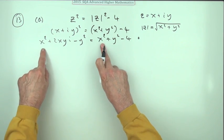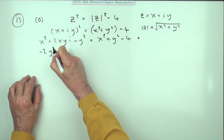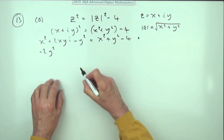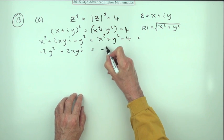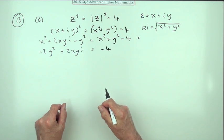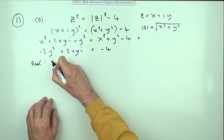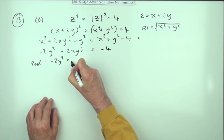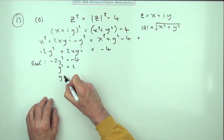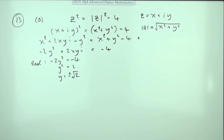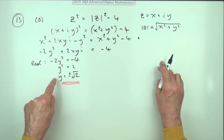The x squared terms cancel out. What we've got left is negative 2y squared as the only real part on this side, and the other part is plus 2xy·i. On the right hand side all we've got is negative 4. Equating the real parts: negative 2y squared equals negative 4, so y squared equals 2, meaning y is plus or minus root 2.